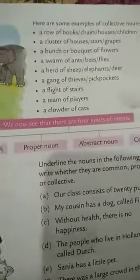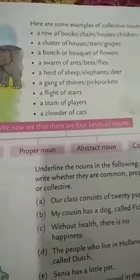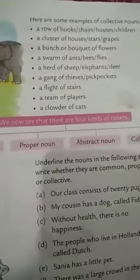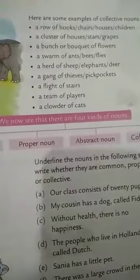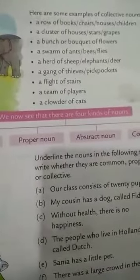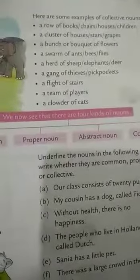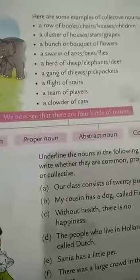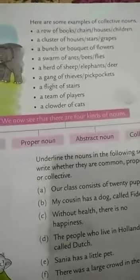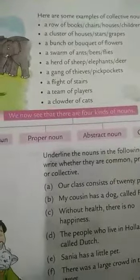A herd of sheep. A herd of elephants. A herd of deer. A gang of thieves. A gang of pickpockets. A flight of stairs. A team of players. A clowder of cats. So these kinds of words represent collective nouns.